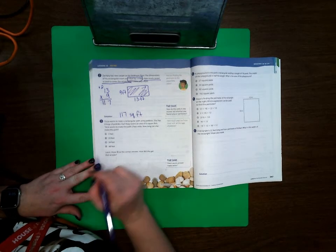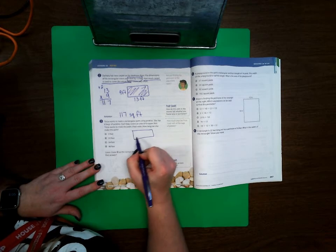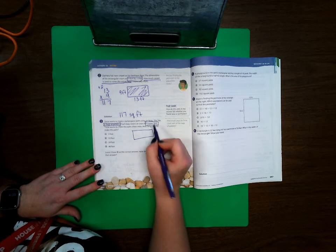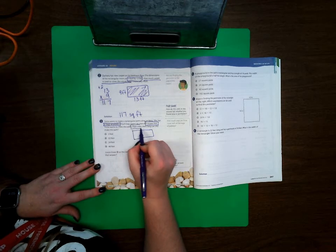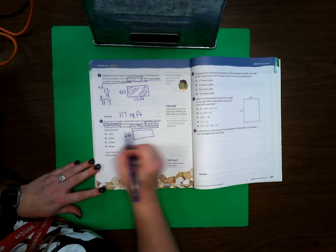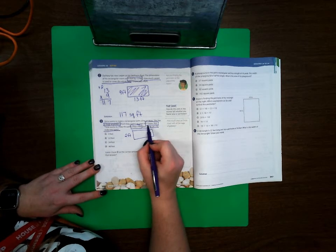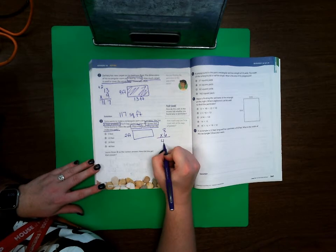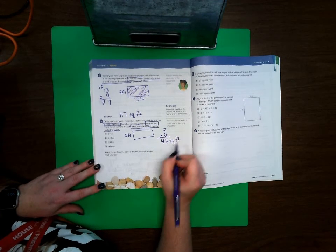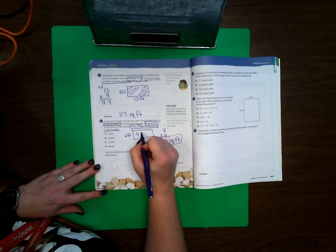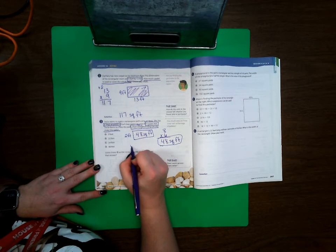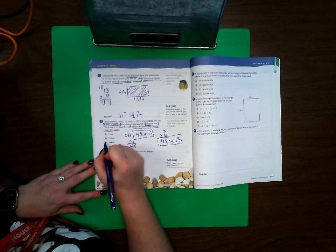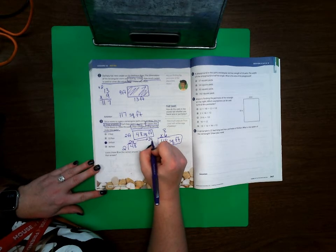Number 3. Trisha wants to make a rectangular path using pebbles. She has 8 bags of pebbles. Each bag covers an area of 6 square feet. Trisha wants to make the path 2 feet wide. How long can she make the path? If each bag covers 6 square feet and she has 8 bags, we can start off by doing 8 times 6, which is 48 square feet is how much she has of pebbles. So that's going to go right here in the middle. Now we can do 48 divided by 2, which is 24. So her answer is C, that she can make the length 24 feet.